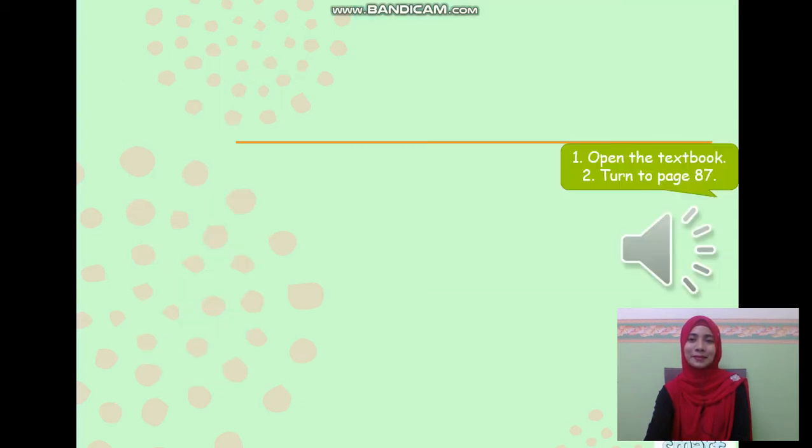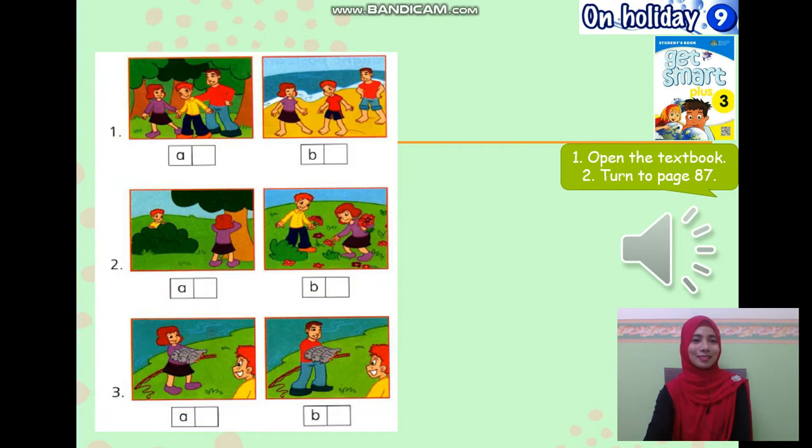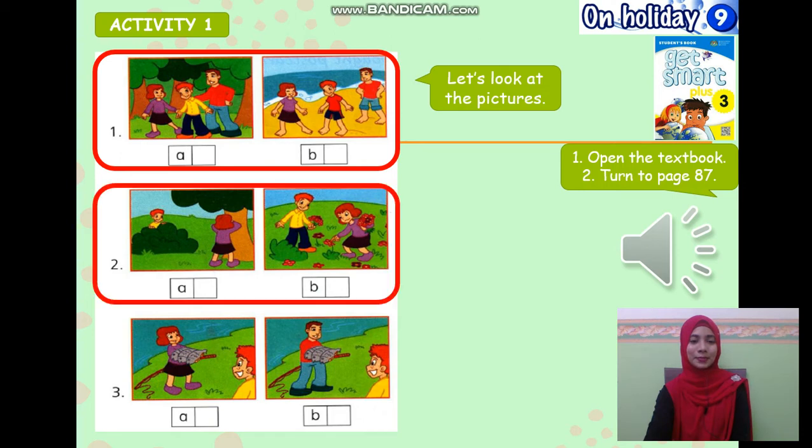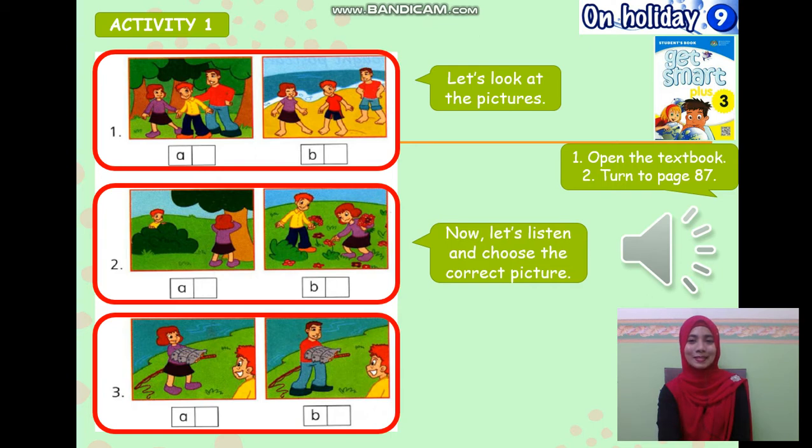Now I want you to open your Get Smart Plus three textbook. Turn to page 87, module 9, on holiday. So, we are looking at this listening activity. Let's look at the pictures. One, two, three.